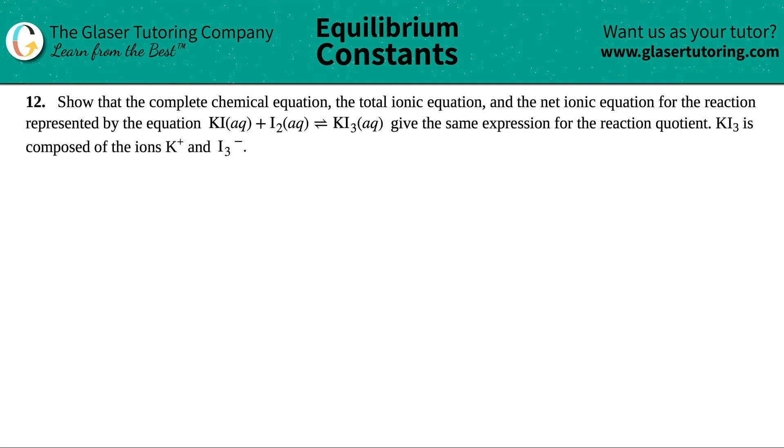Number 12, show that the complete chemical equation, the total ionic equation, and the net ionic equation for the reaction represented by the equation KI aqueous plus I2 aqueous yields KI3 aqueous, gives the same expression for the reaction quotient. And they have KI3 is composed of the ions K plus and I3 minus.